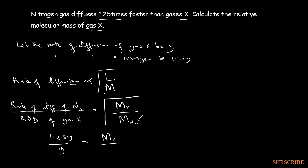So we know that nitrogen has an atomic mass of 14. That means nitrogen gas will be 14 times 2, which is equal to 28. So this is the molecular mass of nitrogen, 28.